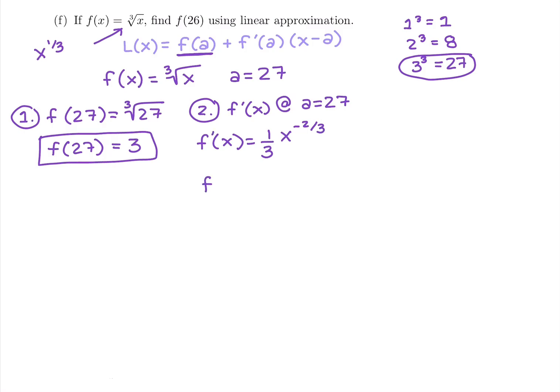So our derivative, f prime of x, is 1/3 times x to the negative 2/3, and we're going to write it in a way so that we can plug in mentally. So we need to bring down that negative power as being a positive in the denominator.